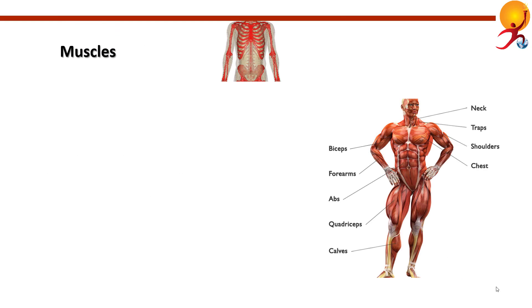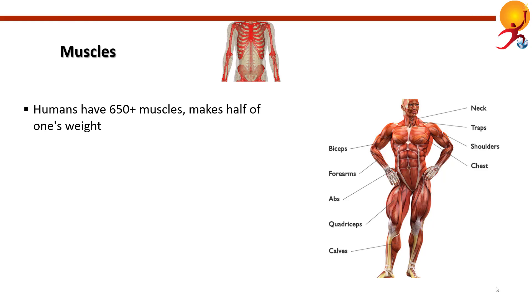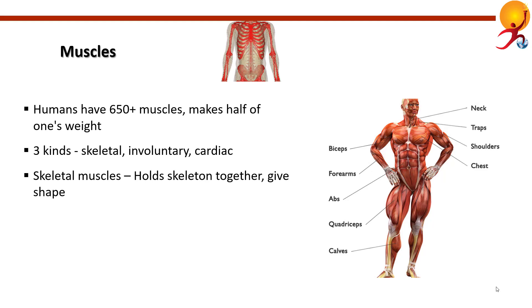The human body has more than 650 muscles, which make up about half of a person's body weight. Humans have three different kinds of muscles: skeletal, smooth (involuntary), and cardiac.